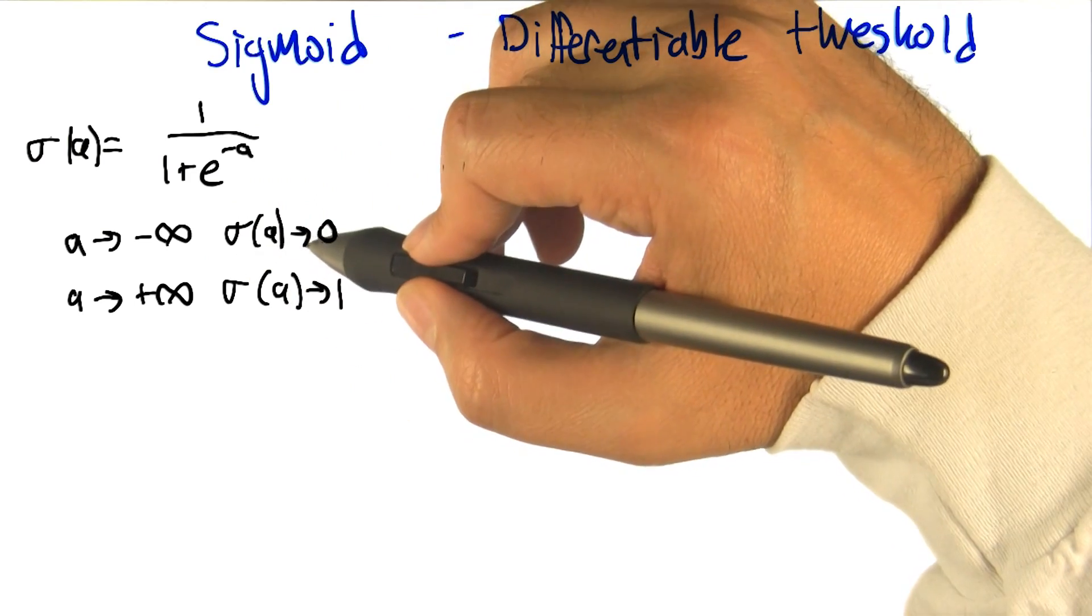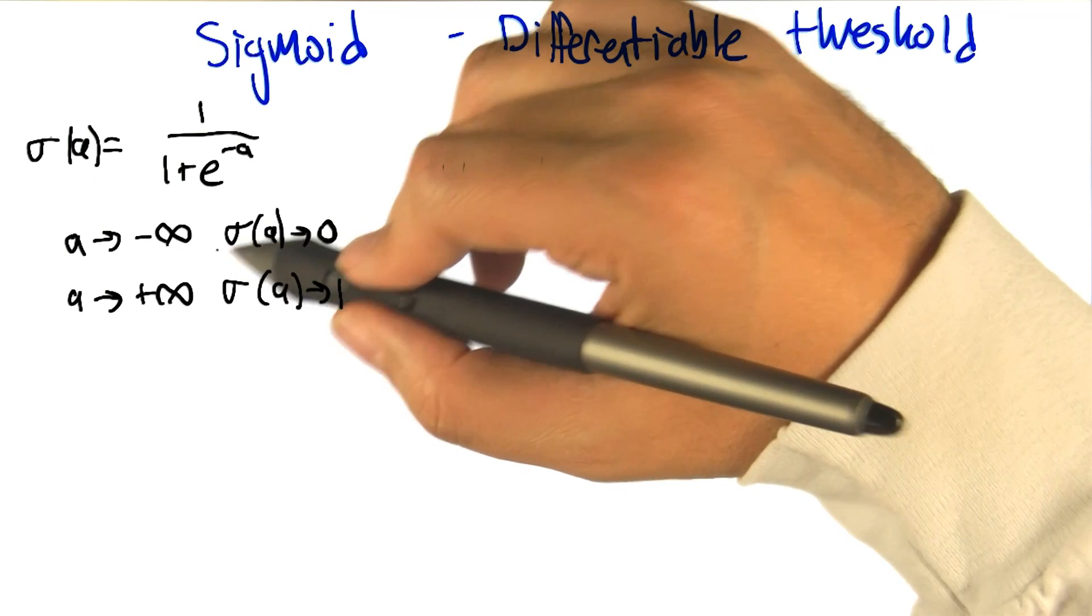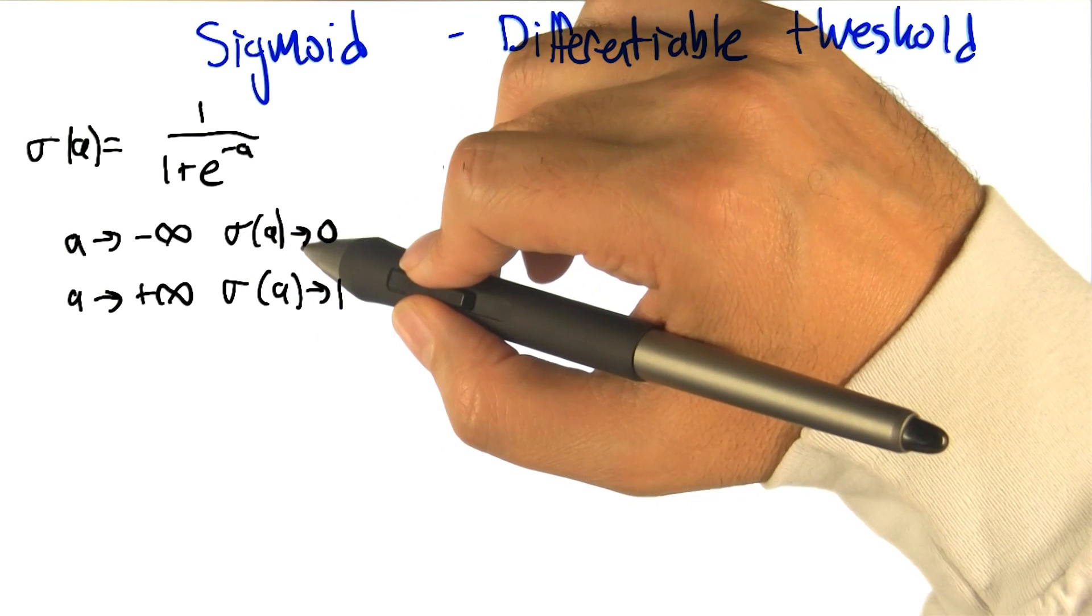So the sigmoid function goes to zero as the activation goes to negative infinity. That's great. That's just like the threshold.